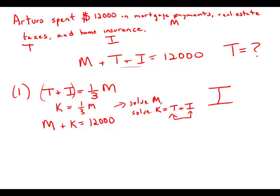Now forget statement number one. Let's focus on statement number two. Statement number two tells us last year, the amount that Arturo spent on his real estate taxes was 20 percent of the total amount he spent on mortgage payment and home insurance. So the amount he spent in taxes is 20 percent, point two, times mortgage plus insurance.